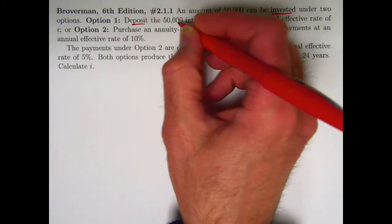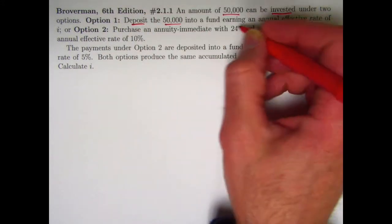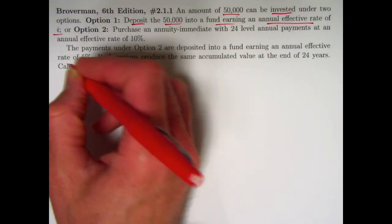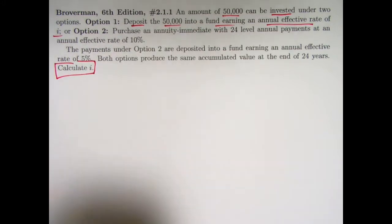Option one is you can just do something fairly simple. Deposit the $50,000 into a fund earning an annual effective rate of I, which is going to be the thing we ultimately solve for.